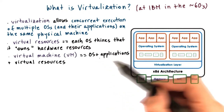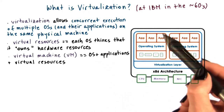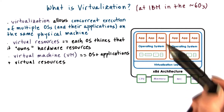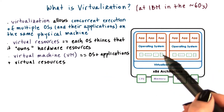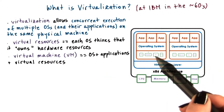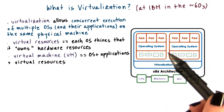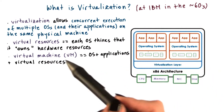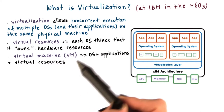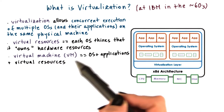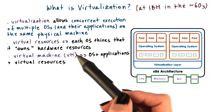Each operating system, together with its applications, as well as the virtual resources that it thinks it owns, is called a virtual machine, or a VM for short.